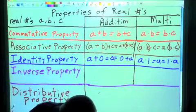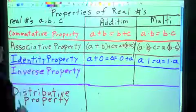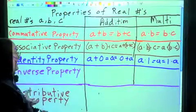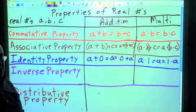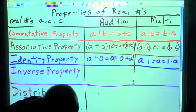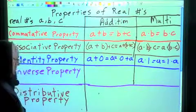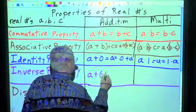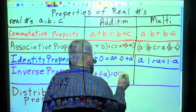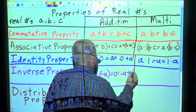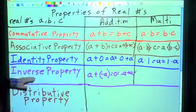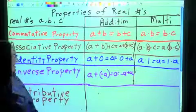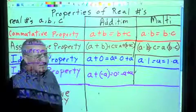The next one is the inverse property. The inverse property says that for any real number A, there is a number that I can add to A that will give me 0. A plus negative A gives me 0, and negative A plus A will also give me 0. The inverse property says there is a number that is the opposite of A that, when I add them together, will give me 0.